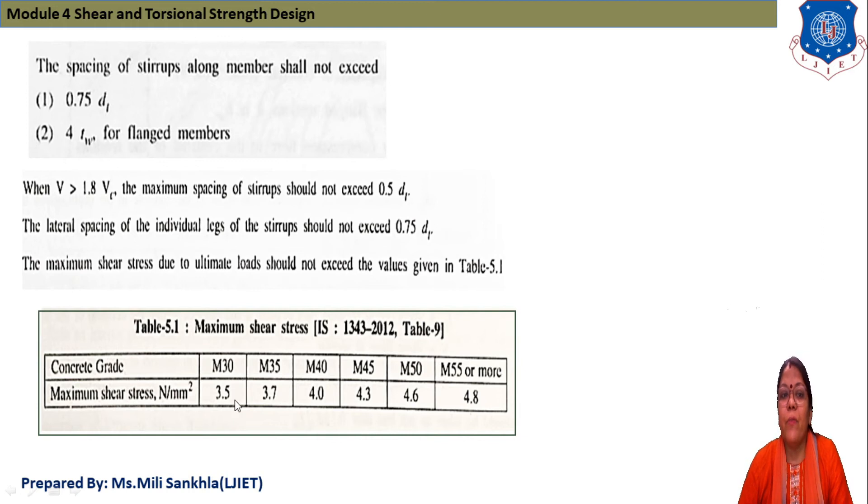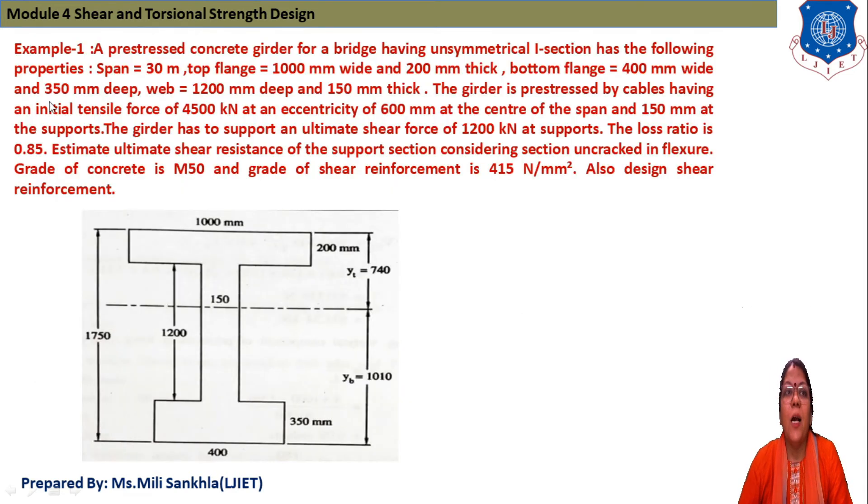If M30 is given, we have to take shear maximum 3.5, M35 3.7. According to our data, we can select the maximum shear stress according to our grade of concrete according to table number 5.1. Example number 1.